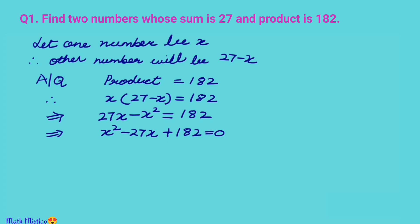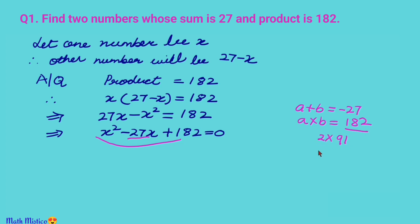Now to solve this I am using the factoring method. We need to find two numbers a and b such that their sum is −27 and their product is 1 × 182 = 182. To split the middle term we break 182 into pairs of factors: 2 × 91, 7 × 26, or 13 × 14. Since the sum is negative, both numbers will be negative. The pair −13 and −14 satisfies a + b = −27.